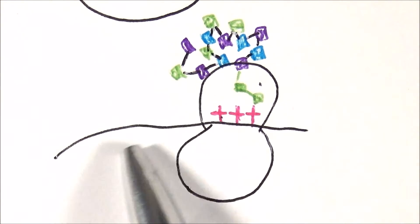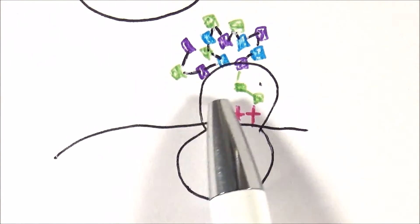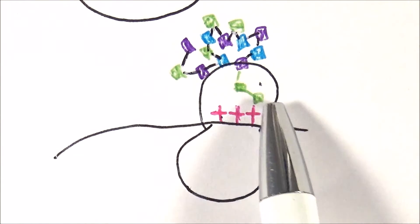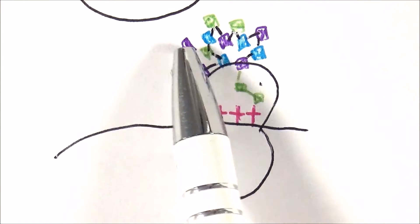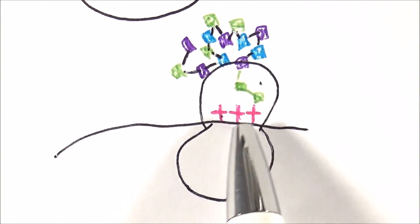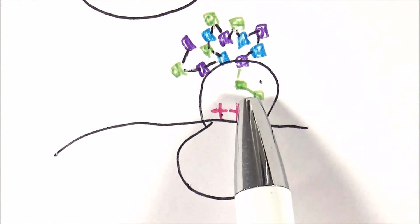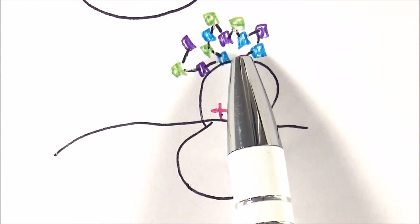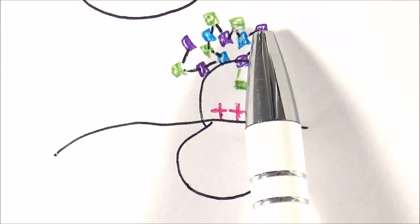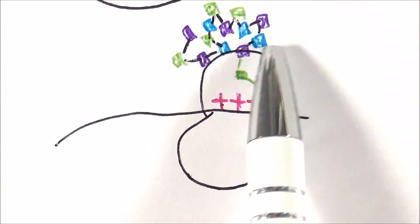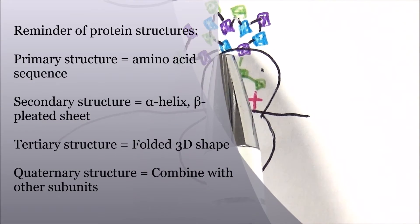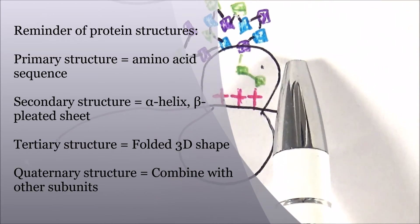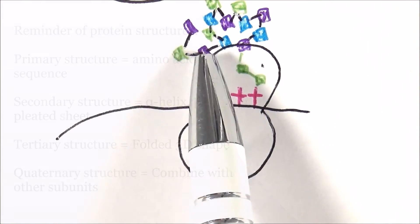The tRNAs are now free of amino acids and leave. The amino acid chain has been built, joined by peptide bonds. As the chain extends, it extends out of the ribosome. Once it leaves the ribosome, other bonds can start forming, twisting the amino acid chain into secondary and tertiary structures.